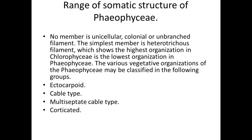There are a few forms showing a truly parenchymatous organization, such as Sargassum, Fucus, and Laminaria, where the true parenchymatous structure is present. In this type, the thallus is leaf-like or laminated with two parenchymatous cell layers. Members of Laminaria and Fucus possess an improved type of parenchyma in them.